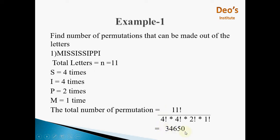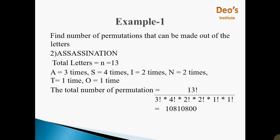The second word is ASSASSINATION. The total number of letters is 13, so n = 13. A is repeated 3 times, S is repeated 4 times, I is repeated 2 times, N is repeated 2 times, T appears 1 time, and O appears 1 time. So the total number of permutations is 13! / (3! × 4! × 2! × 2! × 1! × 1!). Since 1! = 1, those terms can be neglected.